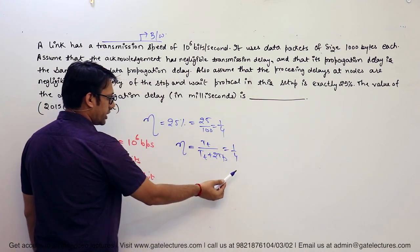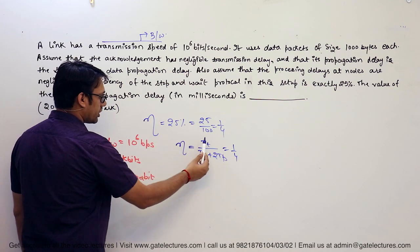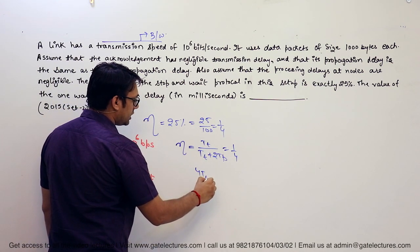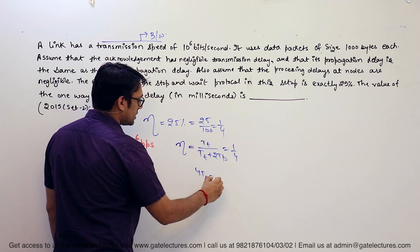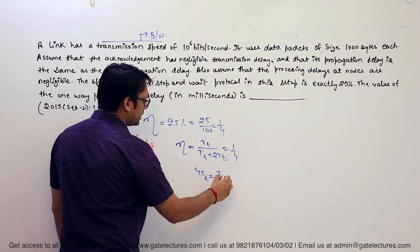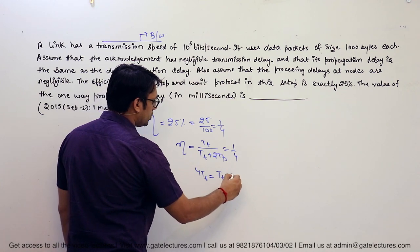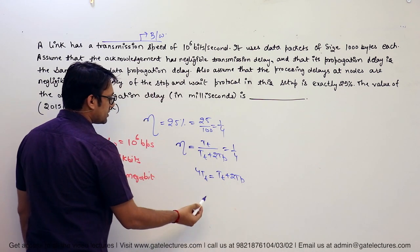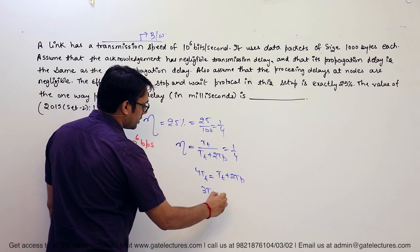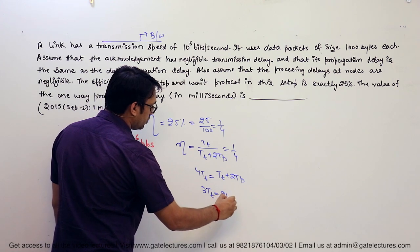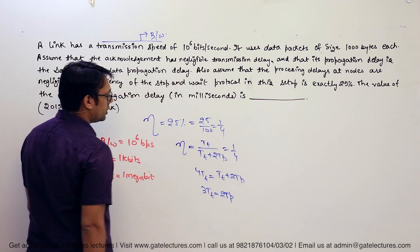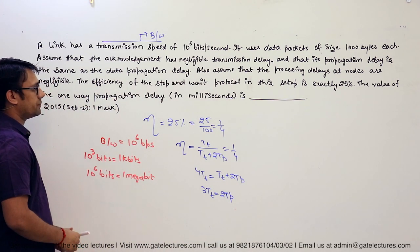We know that efficiency equals tt divided by (tt + 2·tp), and its value is 1/4. Solving: 4·tt = tt + 2·tp, which gives 3·tt = 2·tp, or 3 times transmission time equals 2 times propagation time.